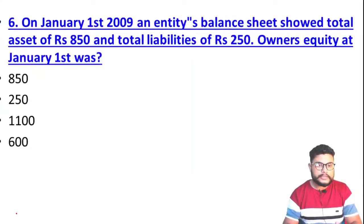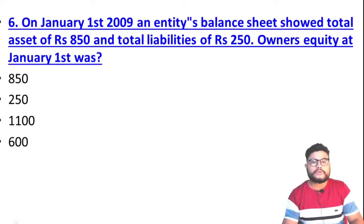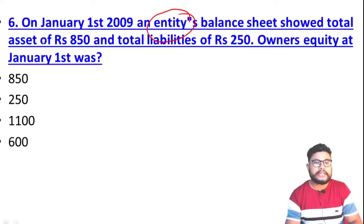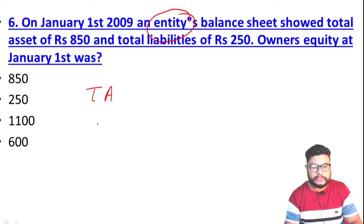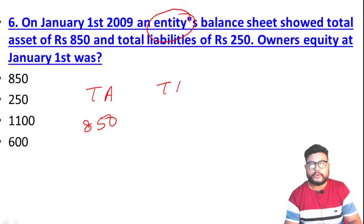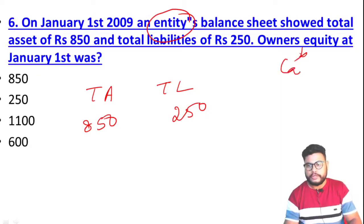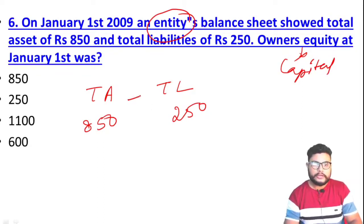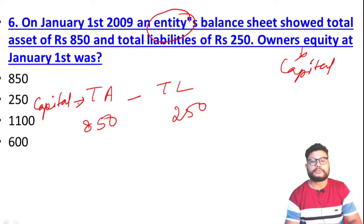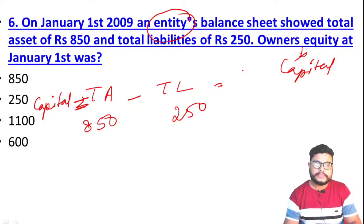Next question: On 1st January 2019, an entity's total assets are 850 and total liabilities are 250. Find the owner's equity or capital. Owner's equity or capital = Total Assets minus Total Liabilities = 850 minus 250 = 600. So the answer is option D, which is 600.